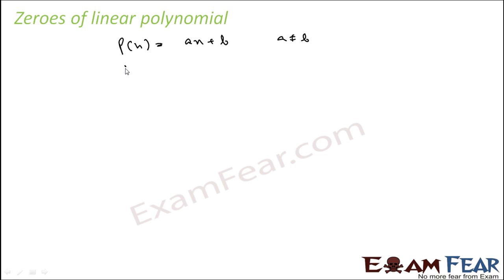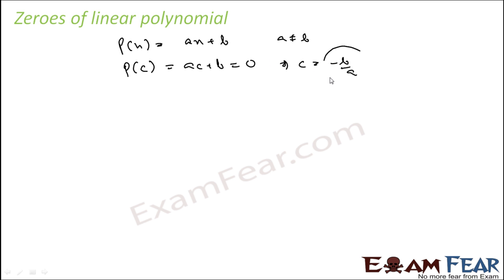Where a is not equal to zero. To find the zeros of a linear polynomial, suppose c is the zero of the polynomial. Then a·c plus b will be equal to zero, so c will be equal to minus b by a. This is the zero of the linear polynomial, and please note this is the only zero.